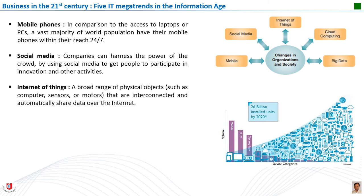The Internet of Things connects lots of physical objects that automatically share data. According to Gartner research, the number of wirelessly connected devices will reach 26 billion by the end of 2020. Cisco estimates the Internet of Things will bring global businesses a profit of close to 14 trillion dollars. An economic study found that 95 percent of business leaders will leverage IoT in the next three years. Examples include monitoring home temperature while on vacation, alerting drivers of parking spaces and traffic volumes, cardiac monitors alerting physicians of health risks, smart cities, smart homes, and e-health.